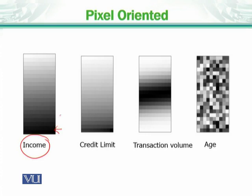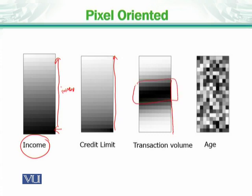As it moves on, this tells you that the employee's income is increasing. If we talk about the credit limit, it is reduced or increased accordingly — as income increases, the credit limit will increase. This is the transaction volume. The transaction volume is dark in the middle, which means that the transaction volume is high at the center point. And the age is a mixture of everything.